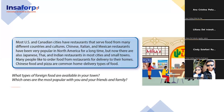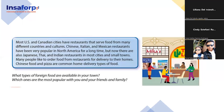Freddy, do me a favor — look at this information, please read it for us. Okay, good evening. Most US and Canadian cities have restaurants that serve food from many different countries and cultures. Chinese, Italian, and Mexican restaurants have been very popular in North America for a long time. But now there are also Japanese, Thai, and Indian restaurants in most cities and small towns. Many people like to order food from restaurants for delivery to their homes. Chinese food and pizza are common home delivery types of food.